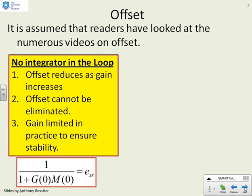Before we start, a bit of background about offset. It's assumed that viewers have looked at the numerous videos on offset, and here we just summarise the key results. If there's no integrator in the loop, offset reduces as gain increases. However, offset cannot be eliminated in general without an integrator, and gain is limited in practice because if you increase the gain too much you will go unstable.